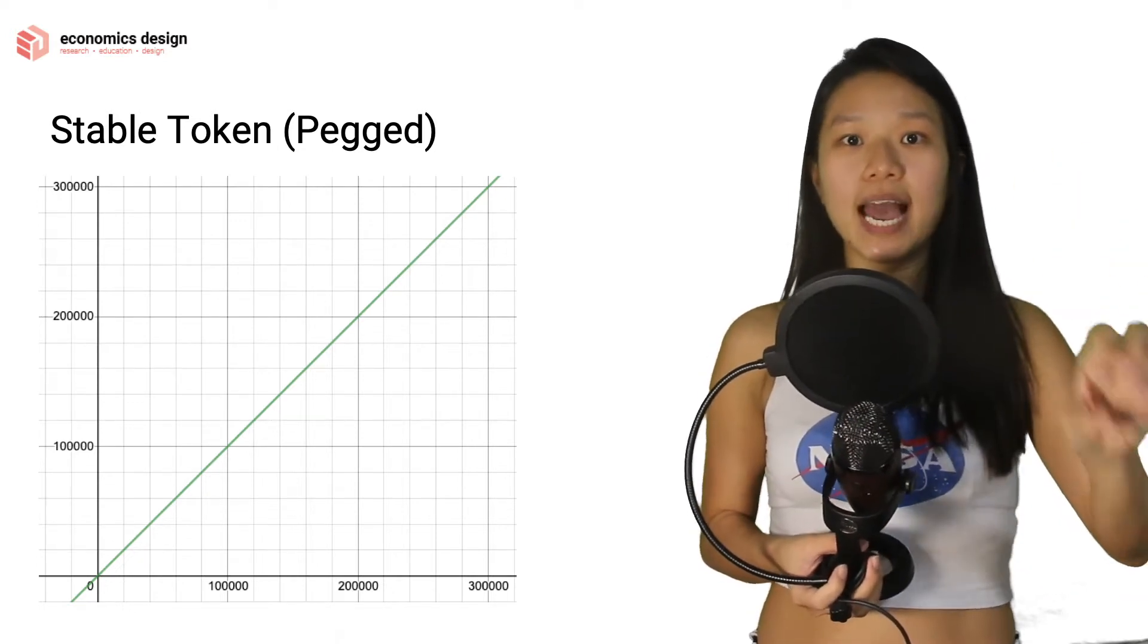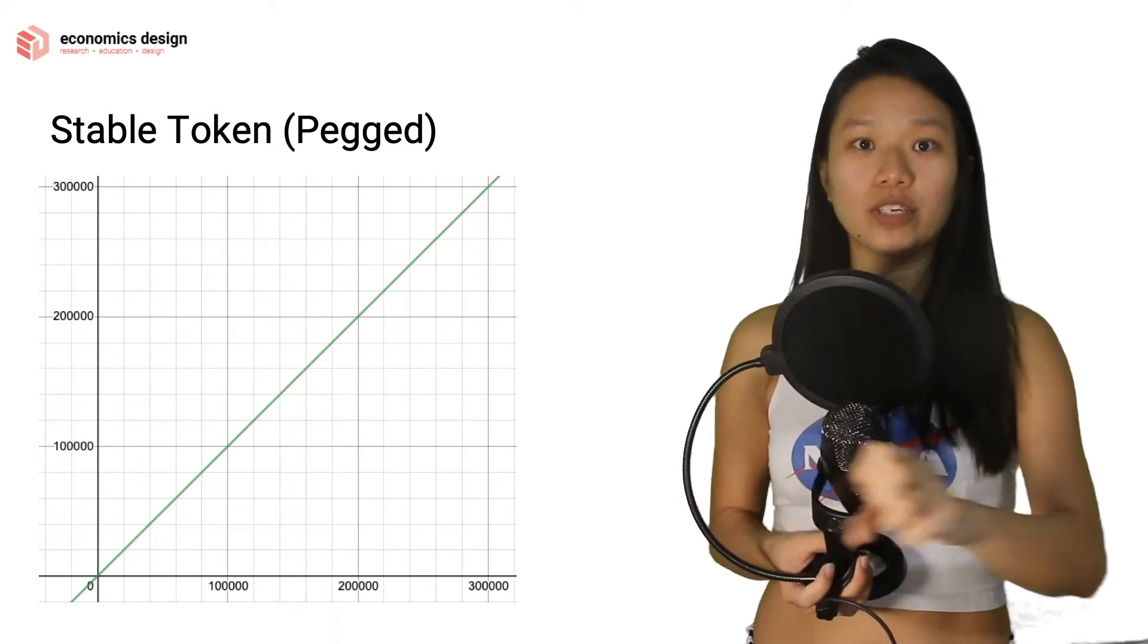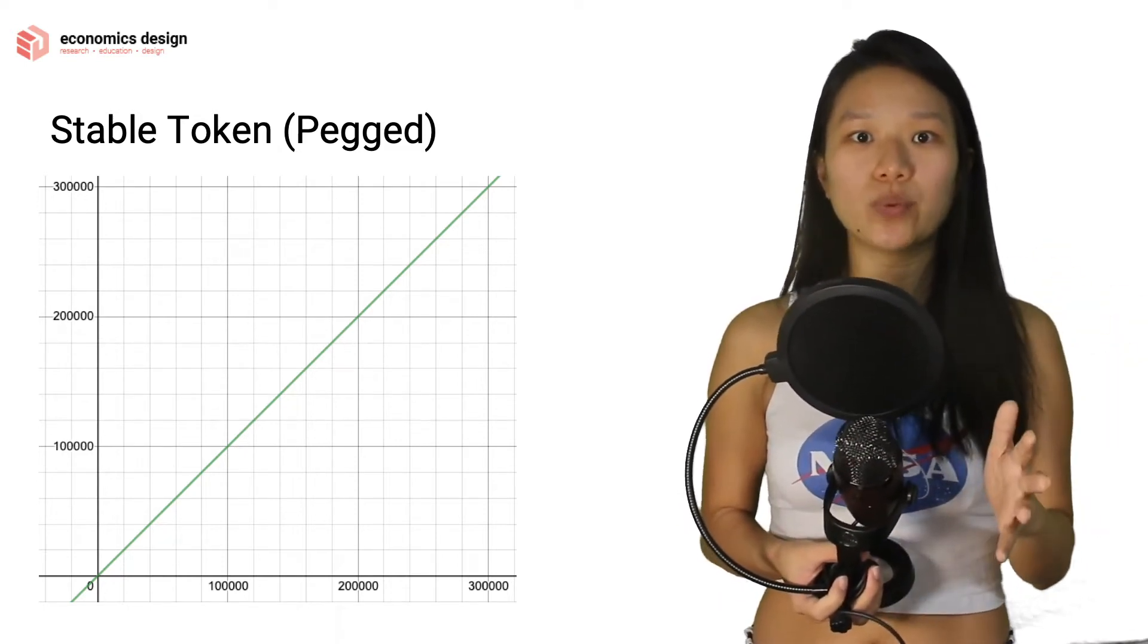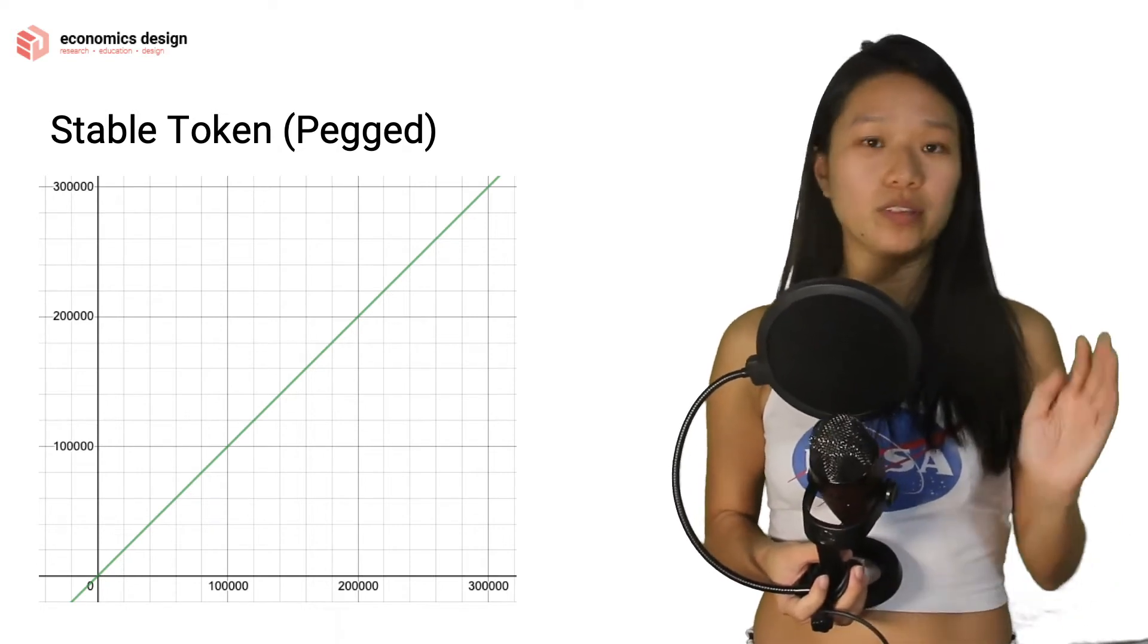One BTC, and you can do a wrapped WBTC around it or synthetic BTC around it. So it's a one-to-one peg. Because it's a one-to-one peg, the function is really simple - it's y equals x.